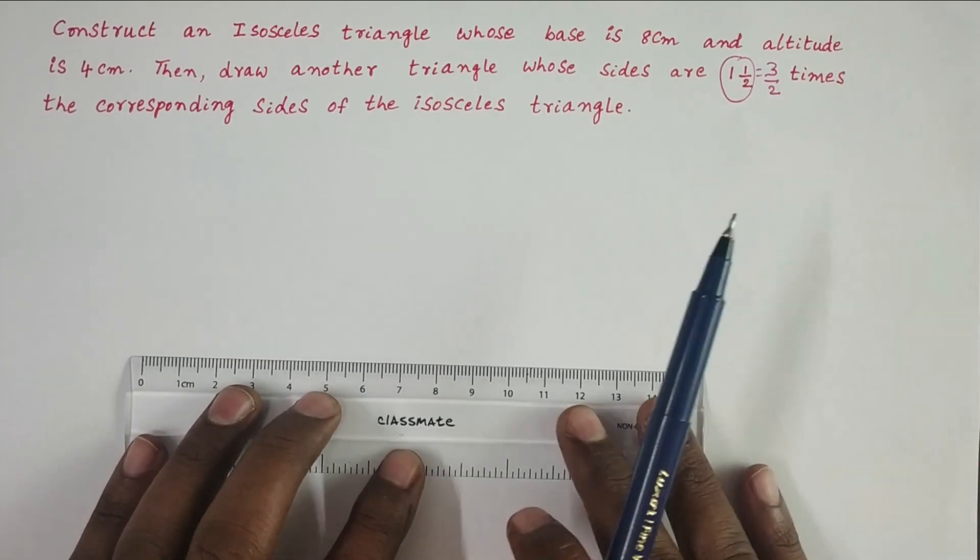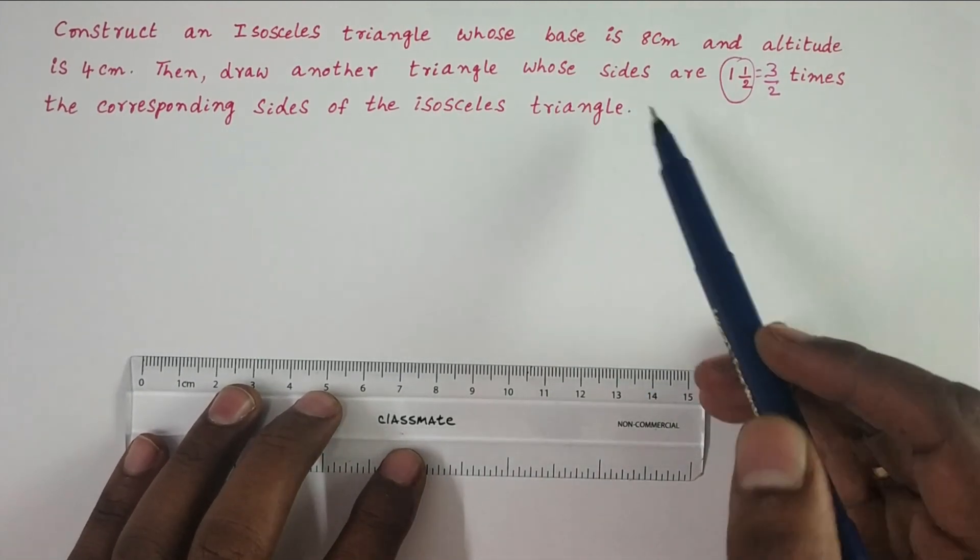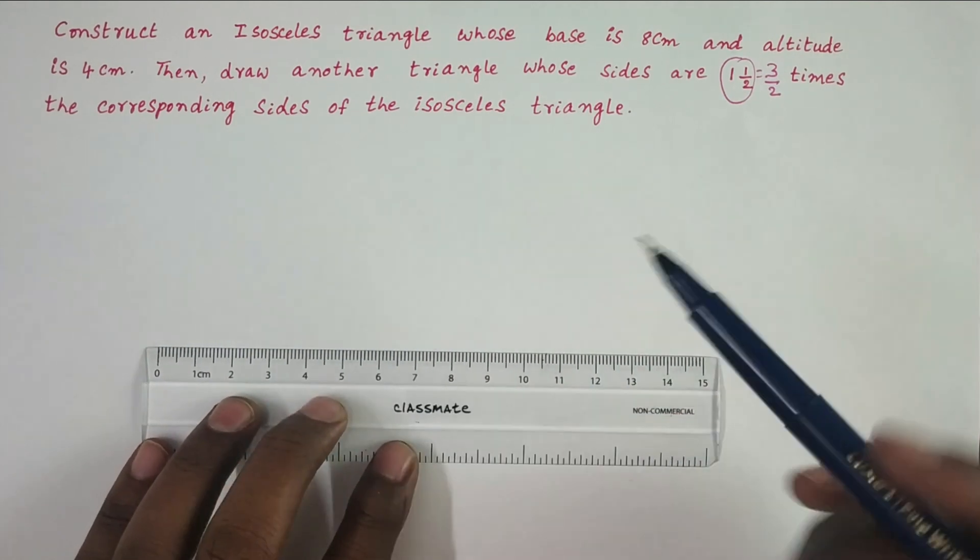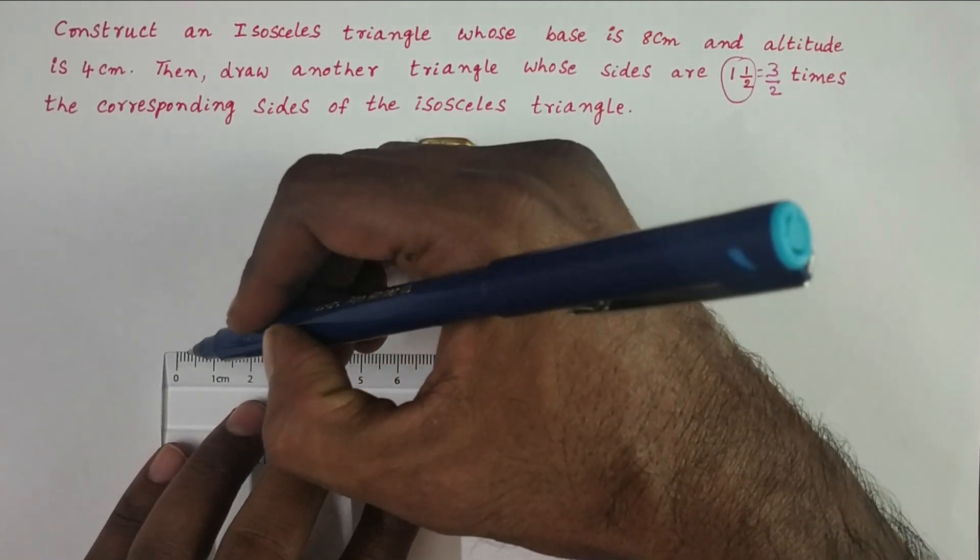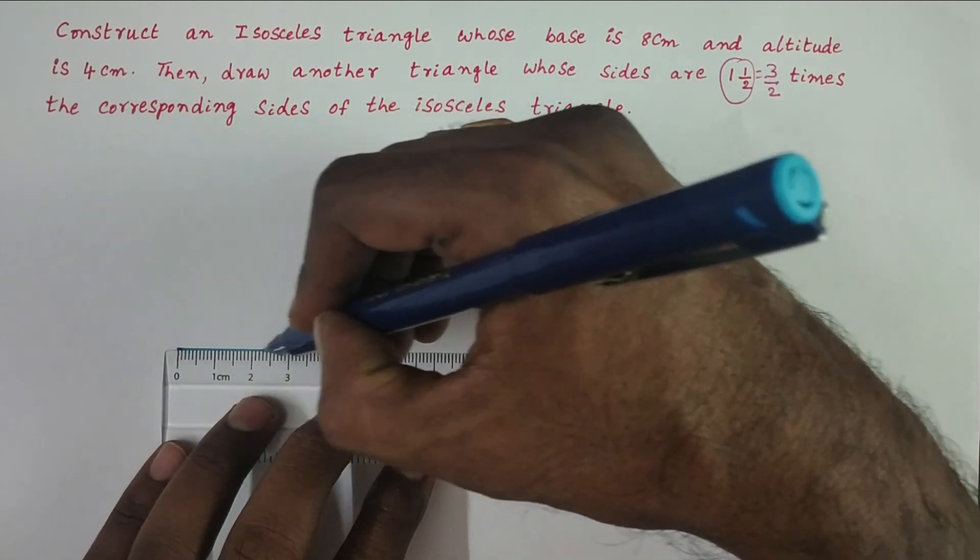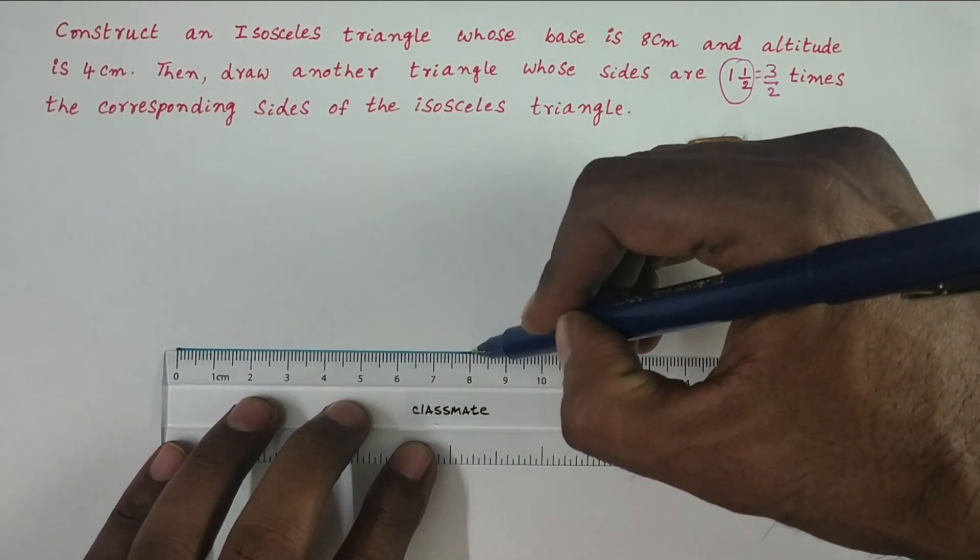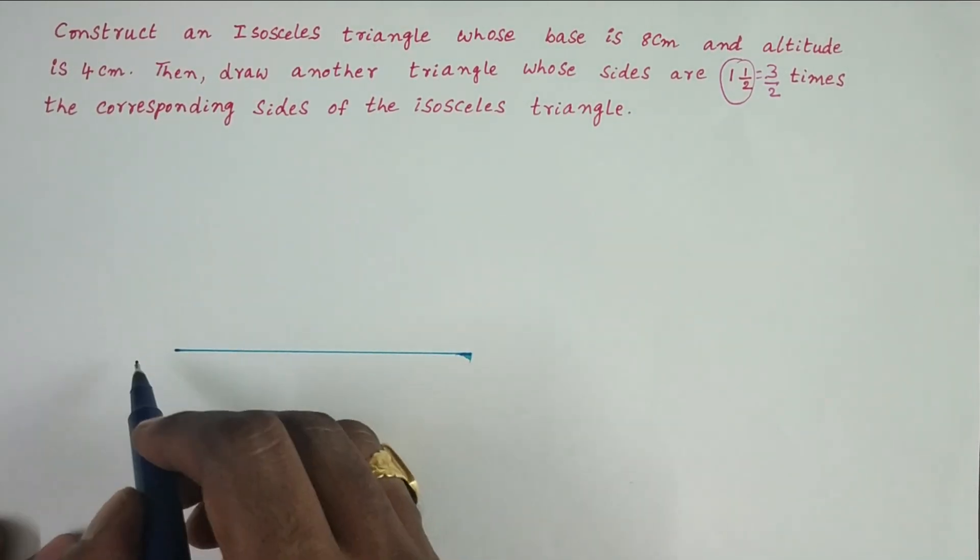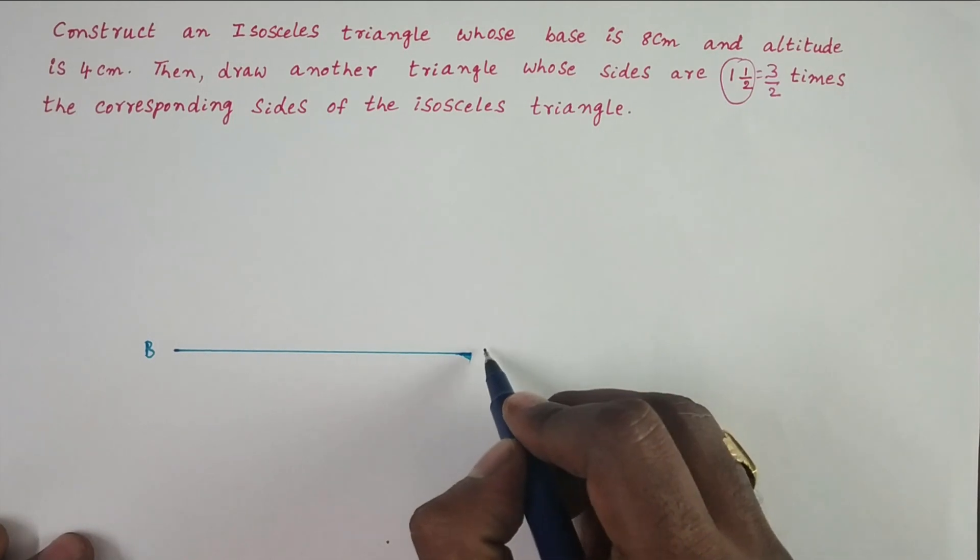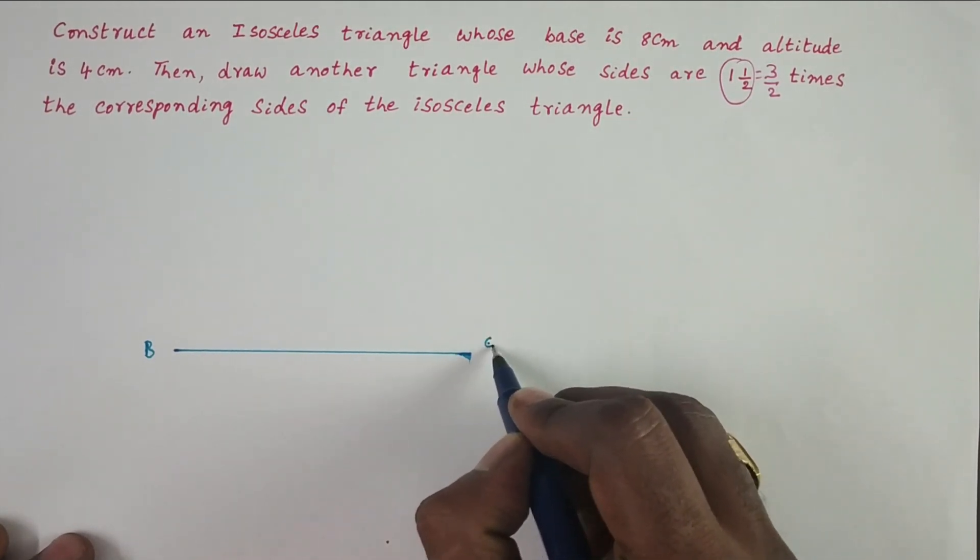Now we have to construct the given triangle. The base of the given triangle is 8 cm. Draw a line segment of 8 cm. Take this base as BC.